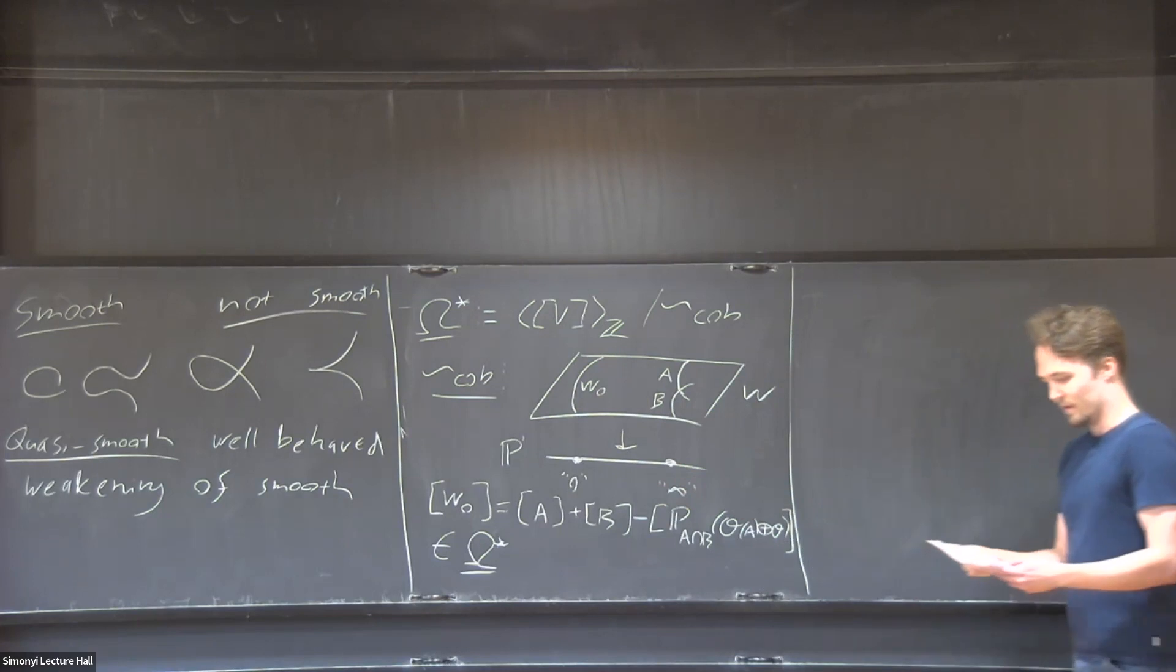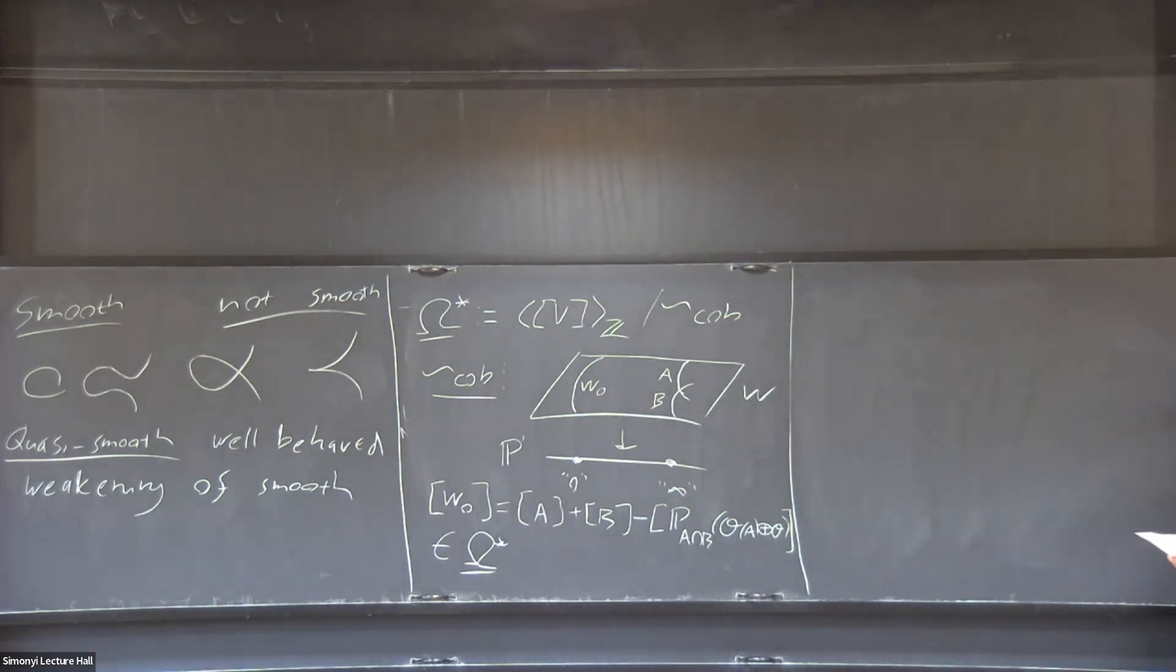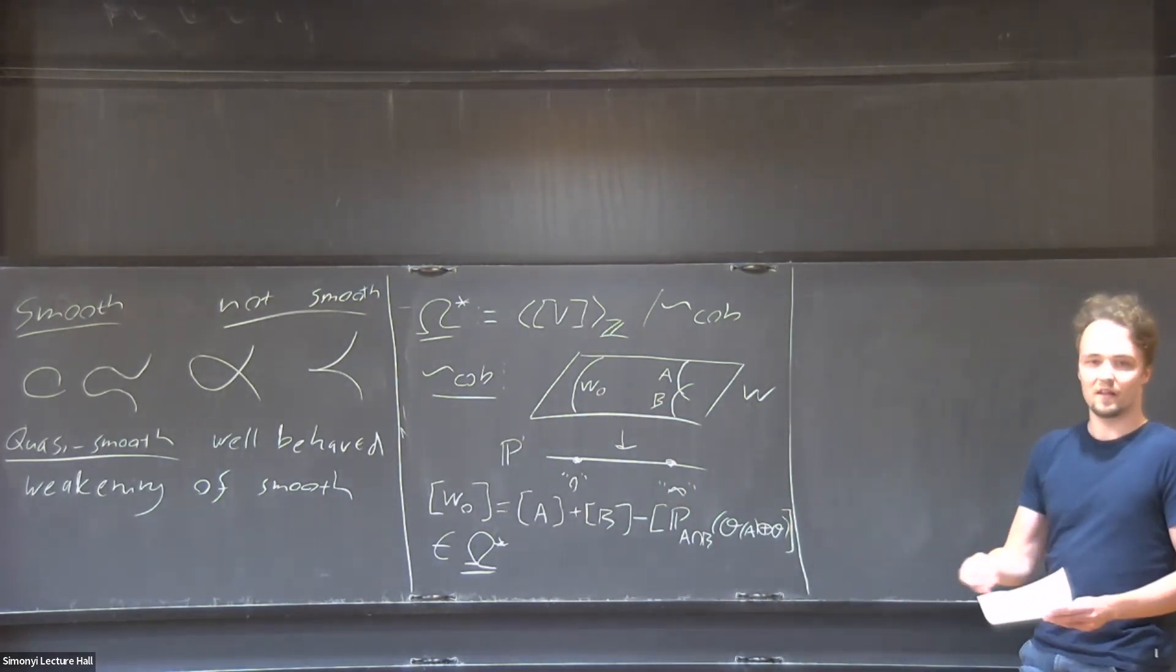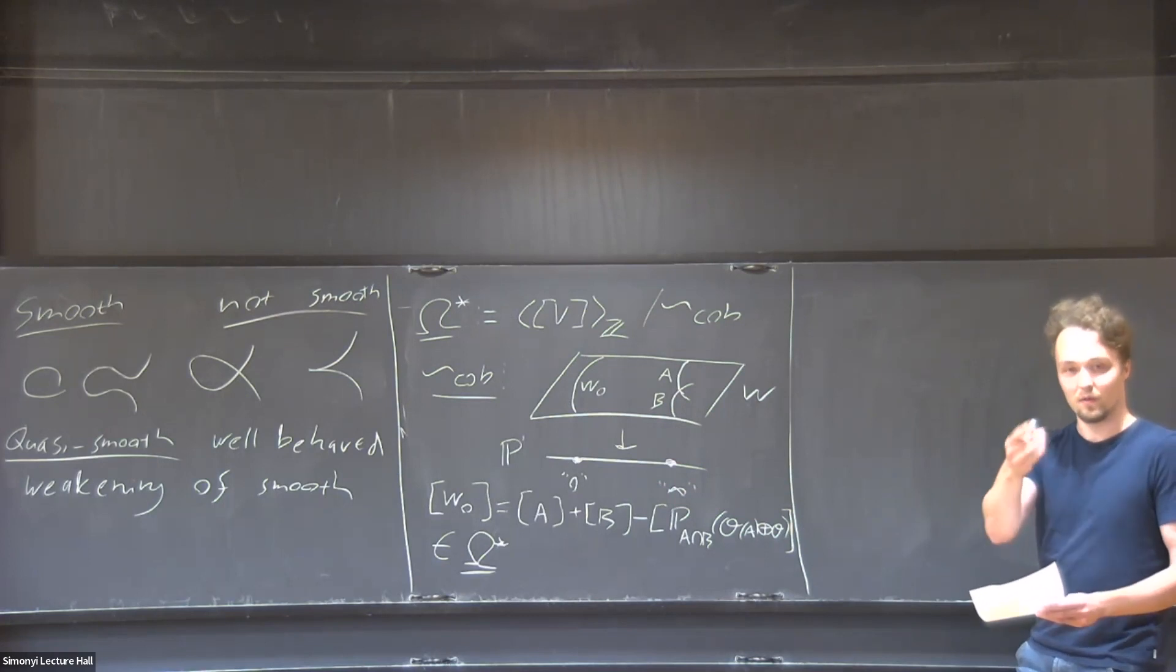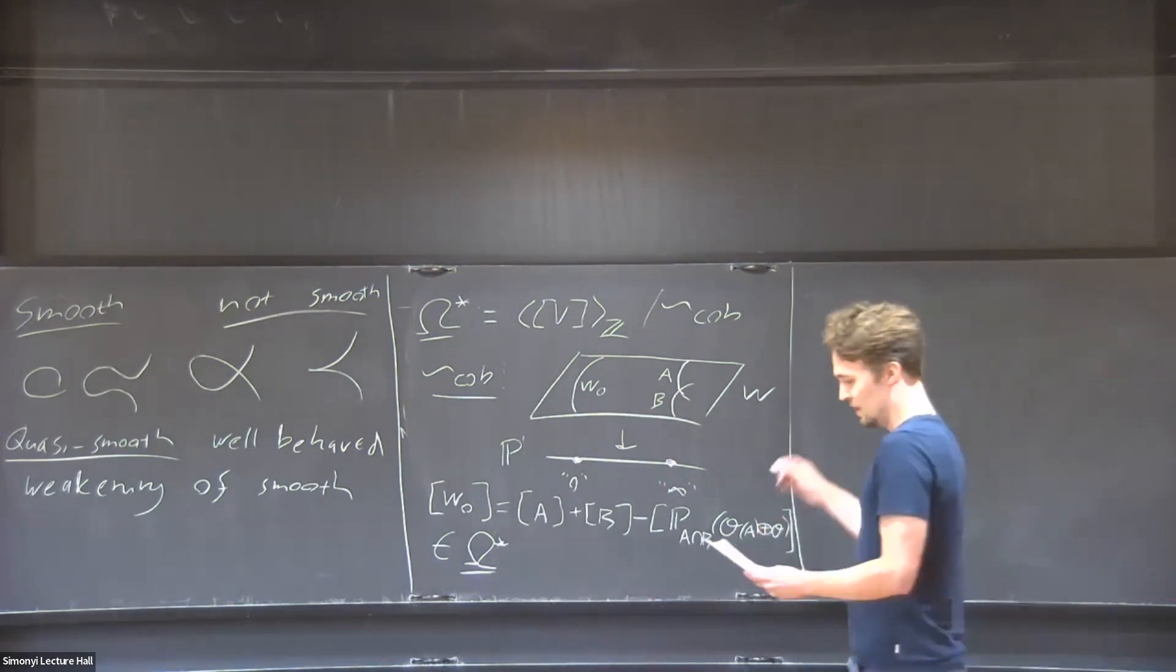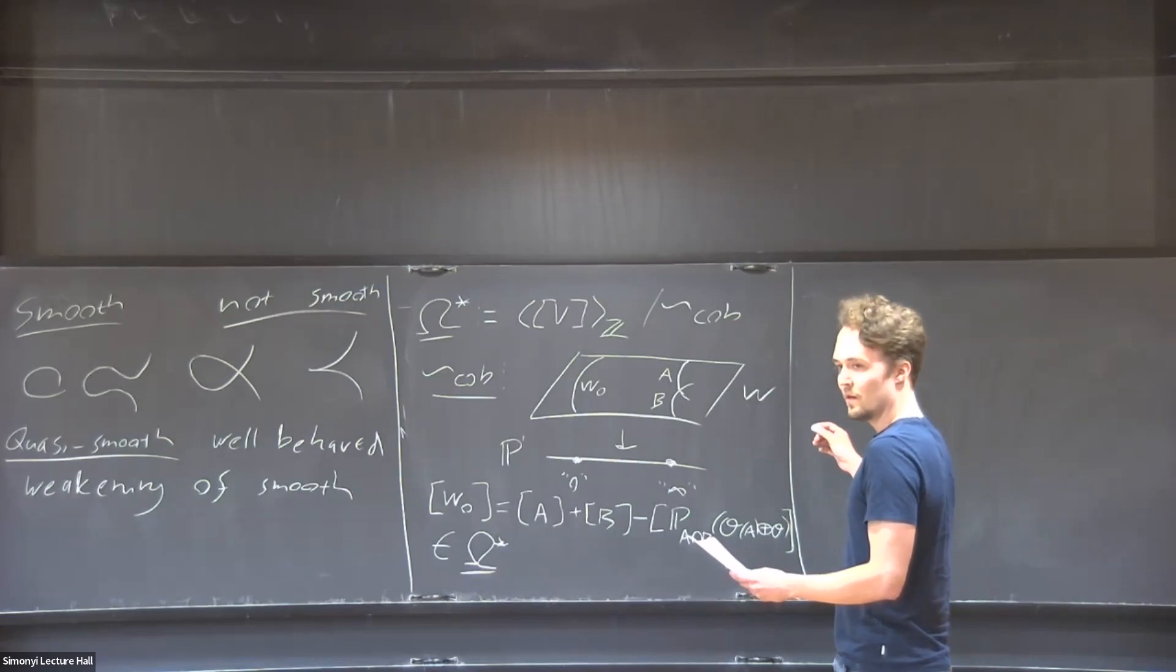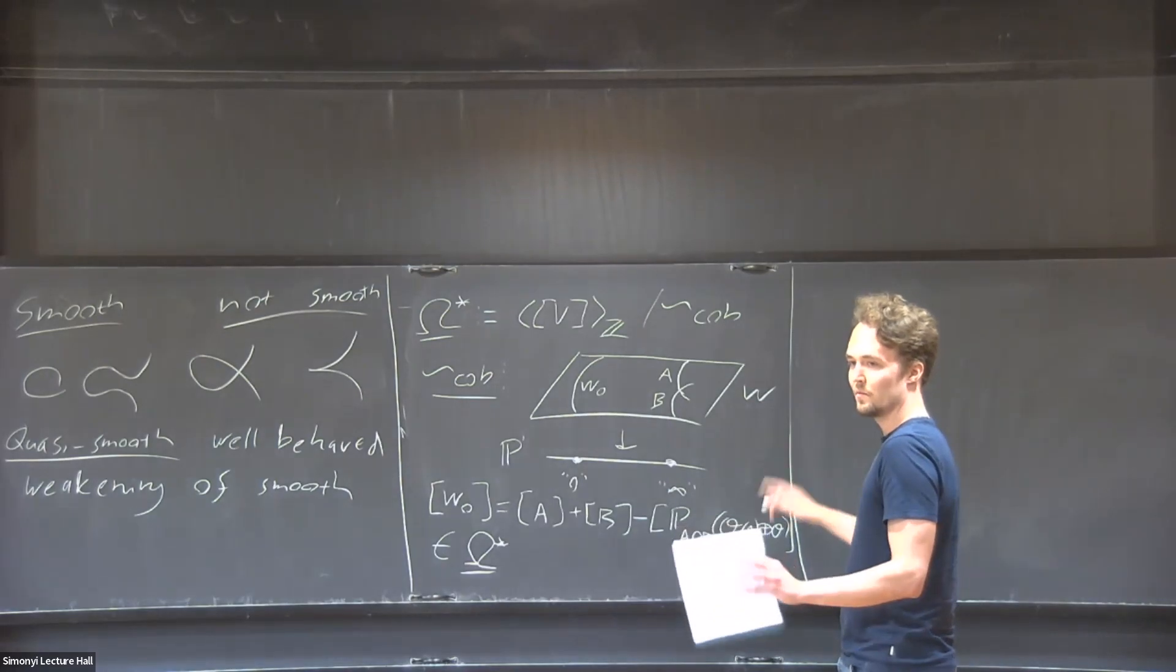A and B are useful components, but they don't have to be irreducible components. You can express it as a sum of two Cartier divisors. You can do this decomposition, and for any decomposition you get the relation like this. A and B are Cartier divisors in W, sort of a derived version—a virtual Cartier divisor, which is basically just the data of a line bundle and a global section.